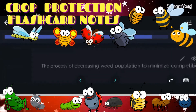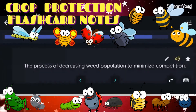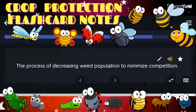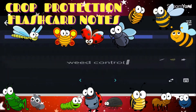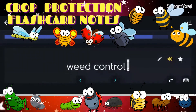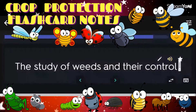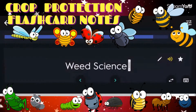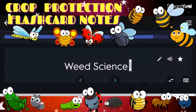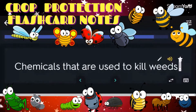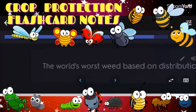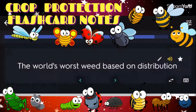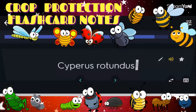The process of decreasing weed population to minimize competition: weed control. The study of weeds and their control: weed science. Chemicals used to kill weeds: herbicides. The world's worst weed based on distribution: Cyperus rotundus.